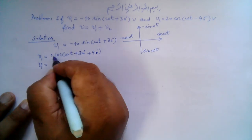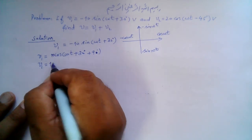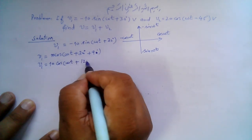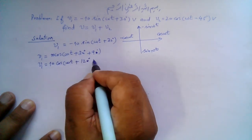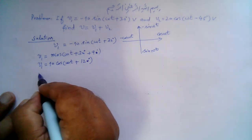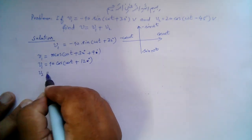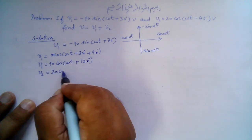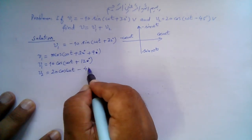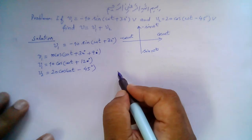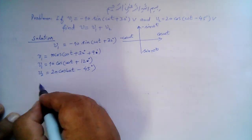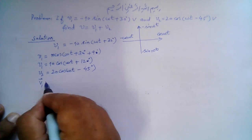So v1 is equal to 10 cos(ωt + 120°). And v2 is already in the standard form: v2 is equal to 20 cos(ωt − 45°). Both these sinusoids have the same angular frequency, so we can work in the phasor domain.